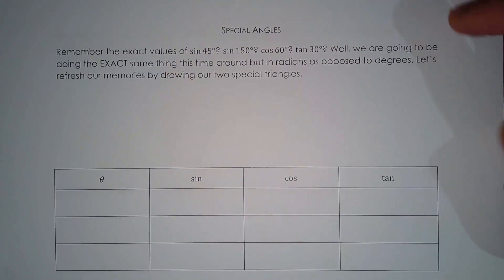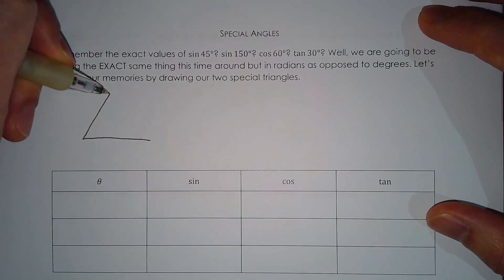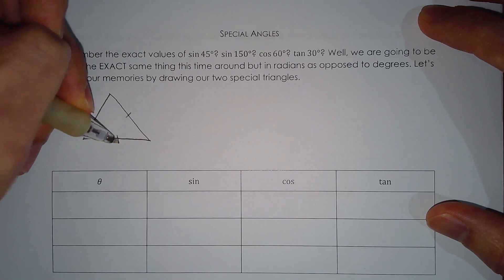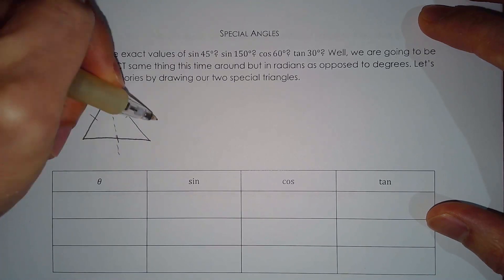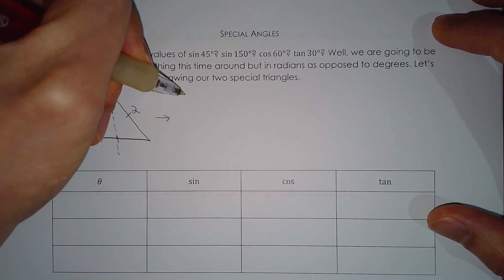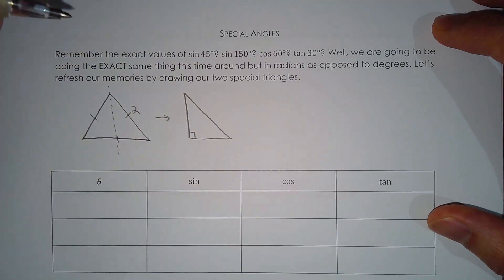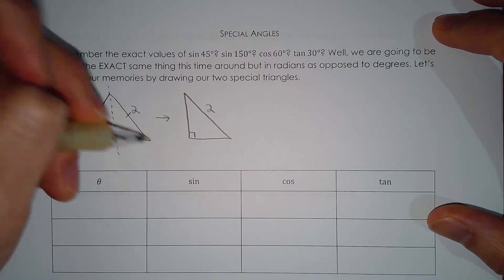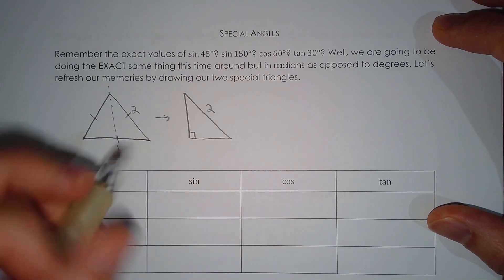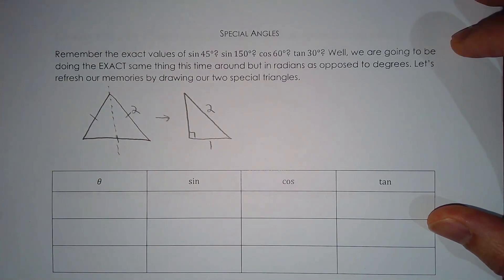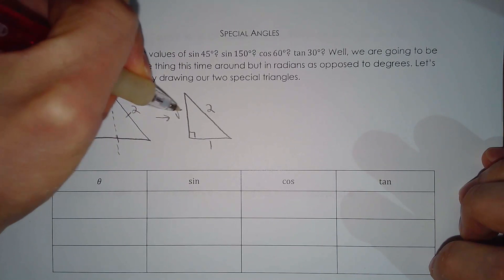Last year we talked about two special triangles. The very first one is derived from an equilateral triangle. The side lengths of the equilateral triangle are two units. What we did was split it in half, and if you split it in half the way I've shown you, you'll get this right triangle. The hypotenuse is two units — same as the equilateral triangle side. This length is half of two, so that's one. For the third side, you can use the Pythagorean theorem and you'll get root three.